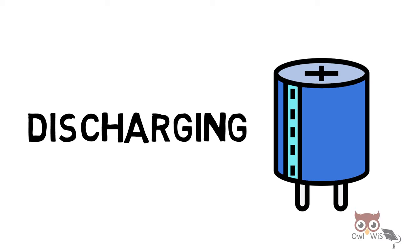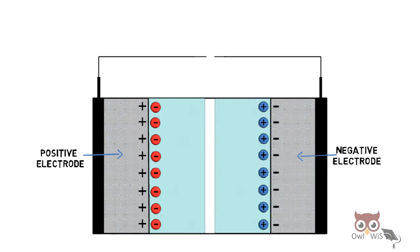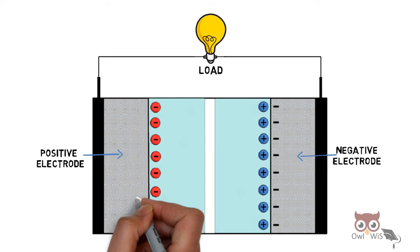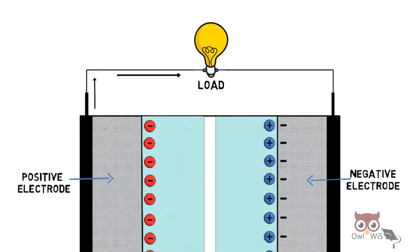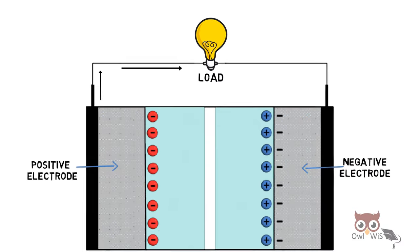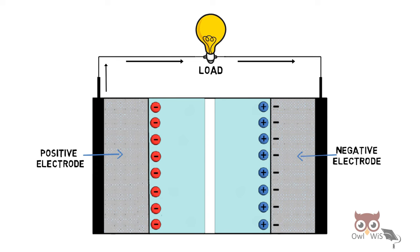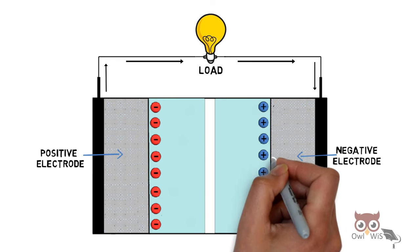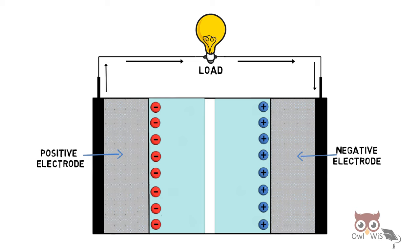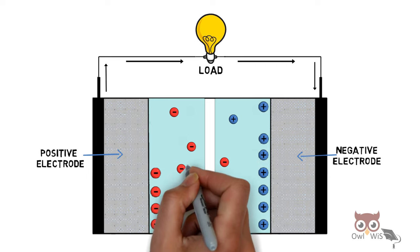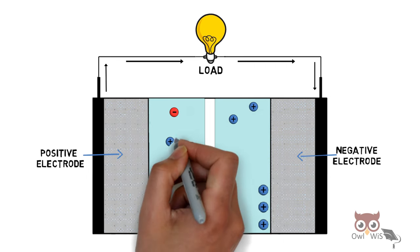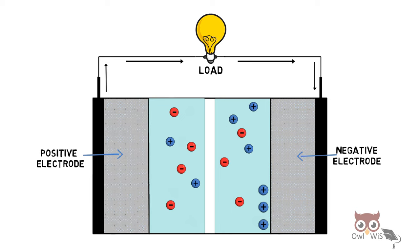During discharging, a load is connected across the electrodes and they start to lose charge. The charge flows through the external circuit and lights up the load to complete the circuit. Both electrodes, positive and negative, lose charges and can no longer attract the ions. The ions start to distribute across the electrolyte as they were before charging.